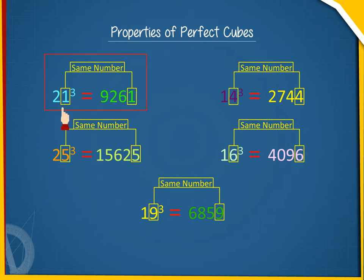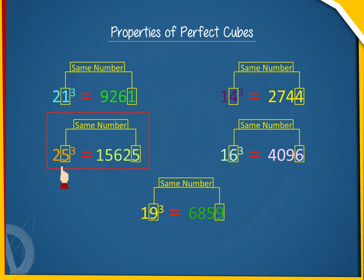For example, 21³ = 9261, 14³ = 2744, 25³ = 15,625, and 19³ = 6,859.